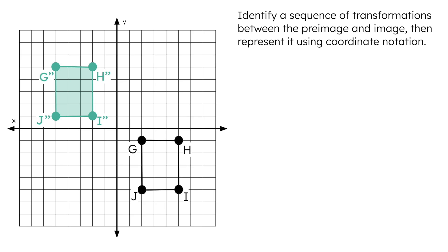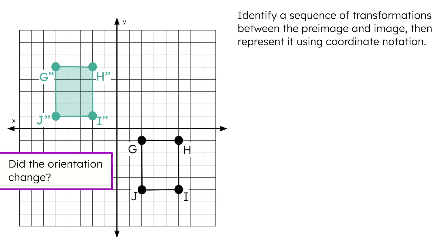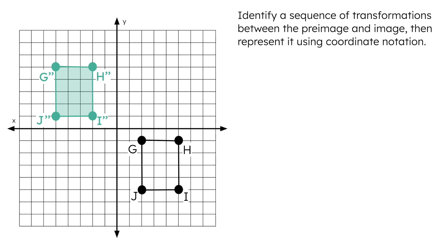Let's look at this example. We want to identify a sequence of transformations between the pre-image and image and represent it using coordinate notation. To determine what transformations took place, let's first ask ourselves: did the orientation change? Are their sides and vertices arranged the same way? The sides and vertices are in the same places on the image as they were on the pre-image. The pre-image did not flip or turn, so the orientation did not change. This means only translations took place in this sequence — the points only shifted or slid from one place to another.